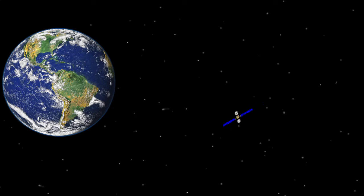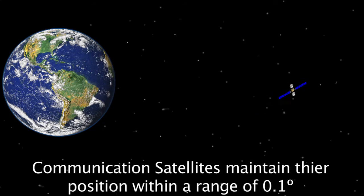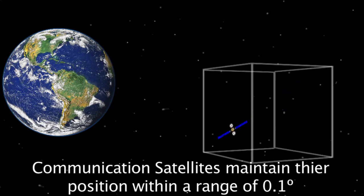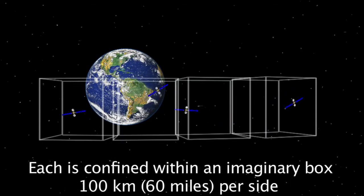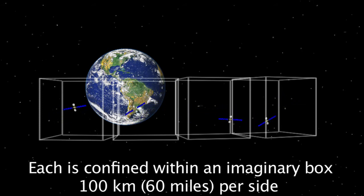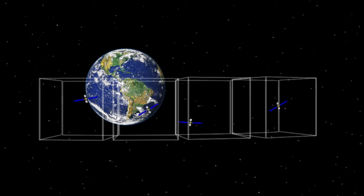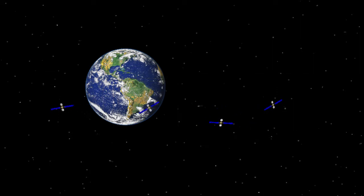To conserve its fuel, a satellite is kept in a holding pattern centered around its designated place in space. A figure-eight pattern can be used as a minimum amount of fuel is required to keep it centered within its box. Each geostationary satellite is given an area 100 kilometers on each side to maneuver within. This imaginary box keeps the satellite separated and on target.